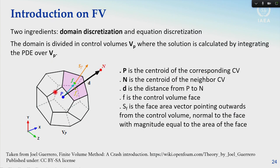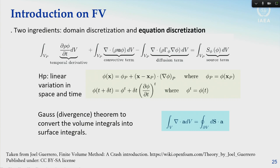In the finite volume method, the domain is divided into control volumes in which the solution is calculated by integrating the PDE. Key nomenclature: P is the centroid of the control volume; N is the centroid of the neighboring control volume; D is the distance; F is the control volume face; S_F is the face area vector, normal to the face with magnitude equal to the face area. For more detail, you can refer to material from Joel Guerrero.